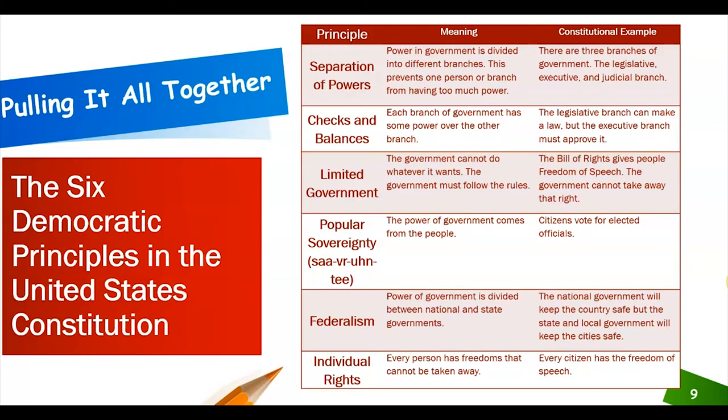Checks and balances: each branch of government has some power over the other branches. A constitutional example is the legislative branch can make a law, but the executive branch must approve it.